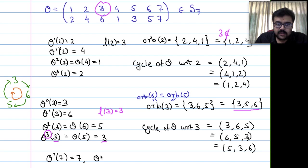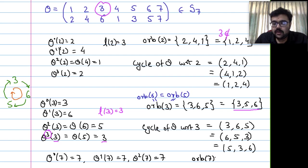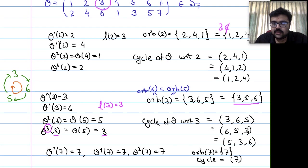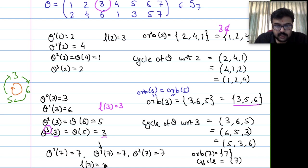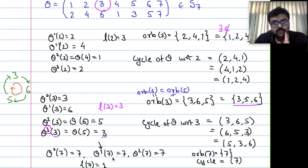The cycle of 7 is the singleton (7) with length 1. So we have seen orbits and cycles by example. Now what happens if we multiply all these cycles? We have cycles (1, 2, 4), (3, 6, 5), and (7). Let us multiply them.